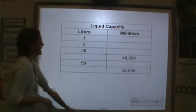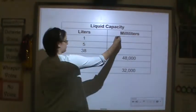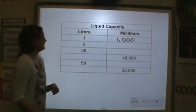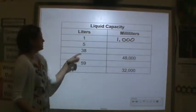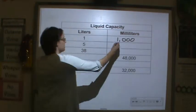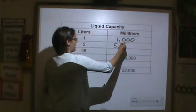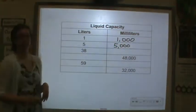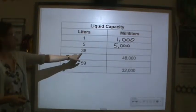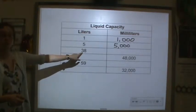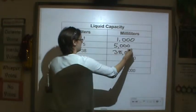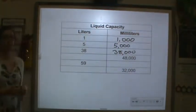One liter is 1,000 milliliters. So five liters will have five groups of a thousand, giving you five thousand milliliters. Thirty-eight liters will have thirty-eight groups of a thousand, so you'll have thirty-eight thousand milliliters.